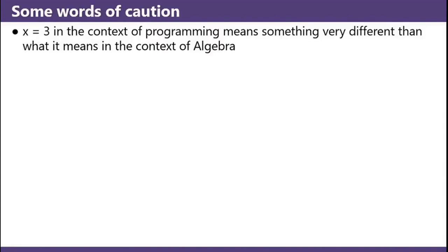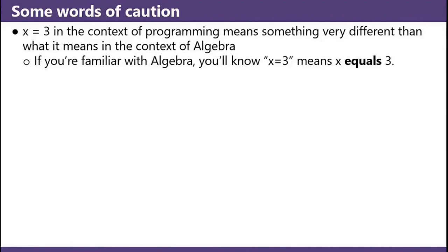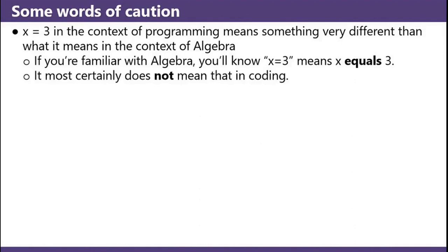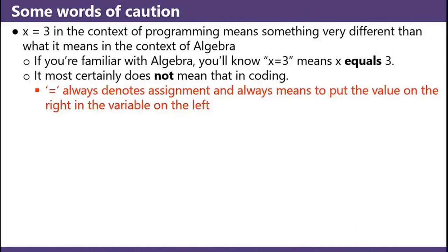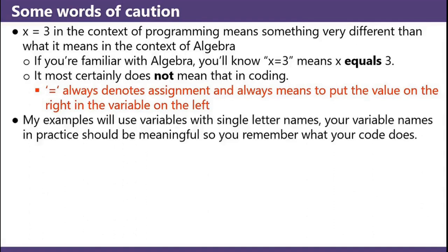Some words of caution. X equals 3 in the context of programming means something very different than what it means in algebra. If you're familiar with algebra, you'll know x equals 3 means x equals 3 — it most certainly does not mean that in coding. Equals always denotes assignment and always means: put the value on the right into the variable on the left. My examples will use variables with single letter names, but your variable names in practice should be meaningful so you remember what your code does.